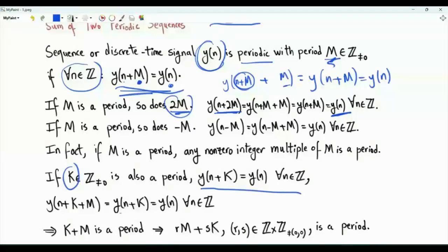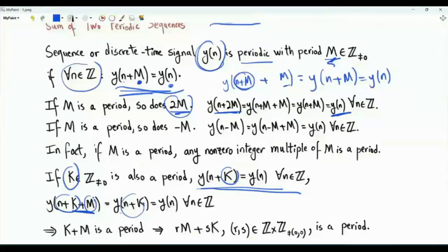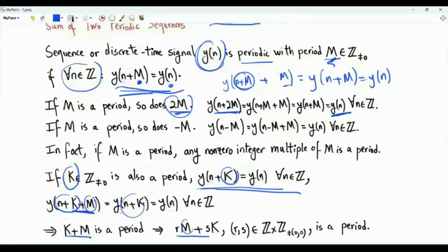This means the periodicity relation is satisfied for every integer n, and also if we replace k by any non-zero integer multiple of k. What about k + M? Is this a period? Yes — y(n + k + M): since M is a period, y of any integer plus M equals y of that integer, and since k is also a period, y(n + k) = y(n). So if k is a period and M is another period, their sum is a period. In fact, any integer combination of M and k, so long as it is not zero, is also a period.